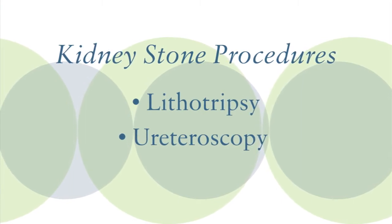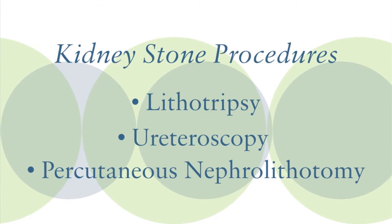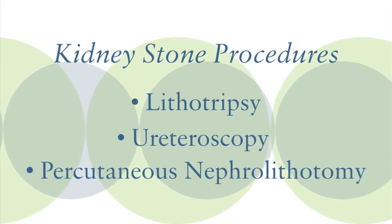For very large stones that are stuck in the kidney, we would do a procedure called percutaneous nephrolithotomy, where we make a small incision in the kidney in order to take out the large stone fragments. If the stone is up in the kidney, you can usually receive lithotripsy or percutaneous nephrolithotomy. However, if the stone is lower in the ureter or near the bladder, then ureteroscopy is usually the preferred method.